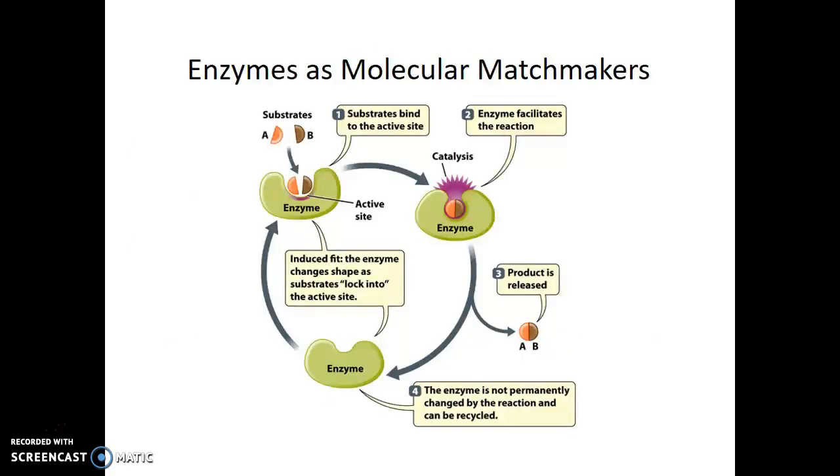This is often described as a lock and key mechanism, whereas the active site for the enzyme will only hold particular shaped substrates, and it's the way that those substrates are positioned next to each other that allows the chemical reaction to occur more quickly. In this particular example, the two substrates are A and B, and the flat sides of those molecules have to come in contact with each other in order for the chemical reaction to proceed.